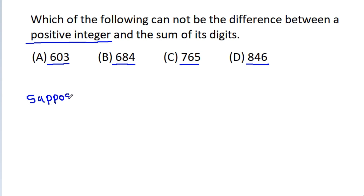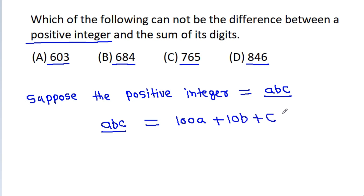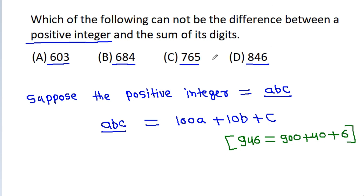Suppose the positive integer has digits a, b, c. Then the number a,b,c equals 100a plus 10b plus c. For example, 946 can be written as 900 plus 40 plus 6. And the sum of digits will be equal to a plus b plus c.